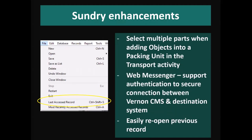There are a few other sundry enhancements. You can now select multiple parts when adding objects into a packing unit in the transport activity. We've added an extra security layer into Web Messenger, which is the process where Vernon sends raw data to another system including Vernon Browser — there's now an authentication layer to secure that connection. Lastly, there's a new shortcut to easily reopen the previous record you were working on, available through the file menu under 'last access record', with a keyboard shortcut of Ctrl+Shift+S.